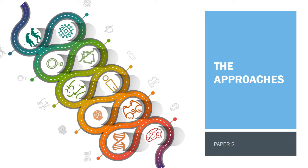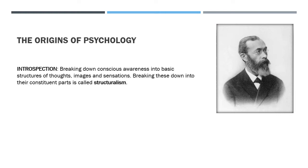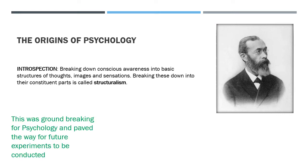We'll start with the origins of psychology. The first piece of research has been credited to Wilhelm Wundt in 1879 in Germany — the first psychological lab experiment. He was looking at introspection, which is breaking down conscious awareness into basic structures of thoughts, images and sensations. By breaking these down into their constituent parts, this is called structuralism. It paved the way for future research and experiments to be conducted — this is where psychology started.